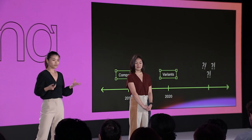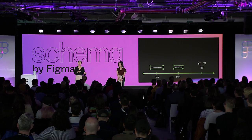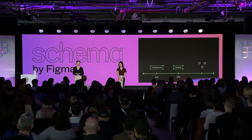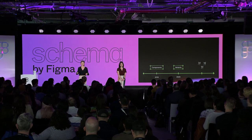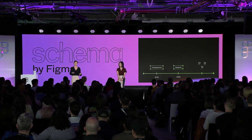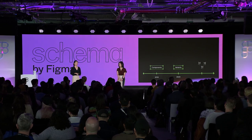After all of these issues, we went back to the drawing table after the variants launch and asked ourselves: is there anything else we can do to make building design systems in Figma a lot easier? That's when we started brainstorming what's now known as props.